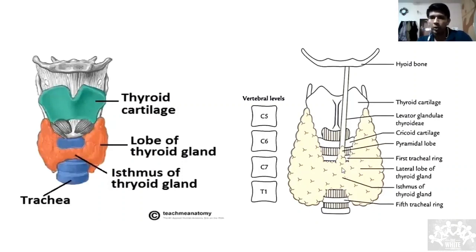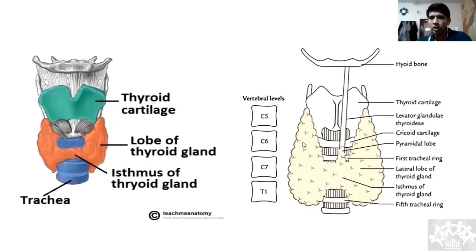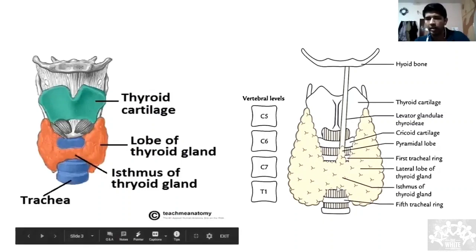Why is the isthmus important? The gland has lymphatics inside it, and from one lobe the lymphatics connect to the other lobe via this isthmus — that is important to keep in mind. The isthmus lies across the second to fourth tracheal ring.